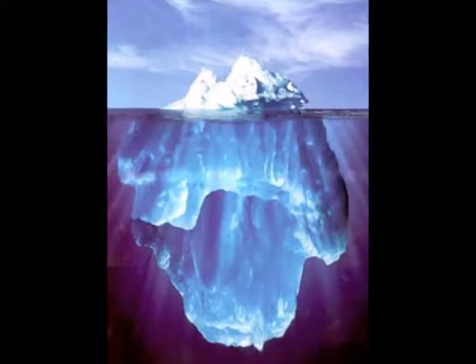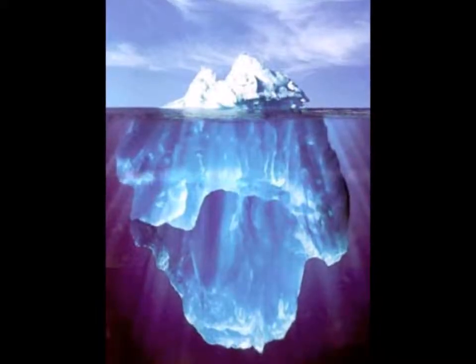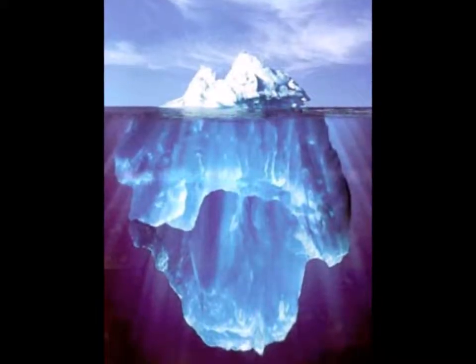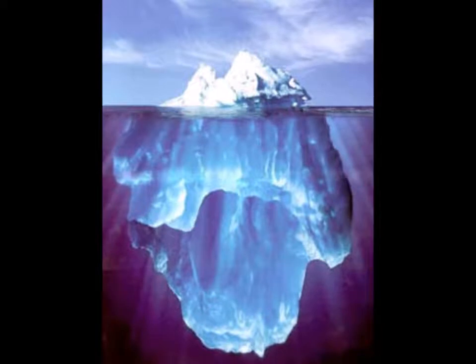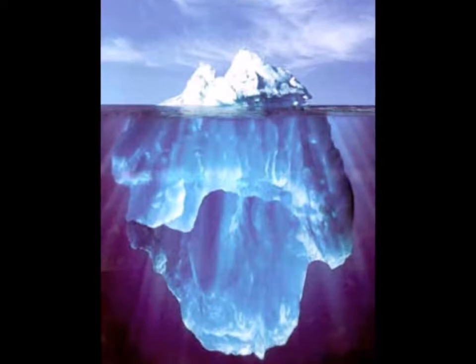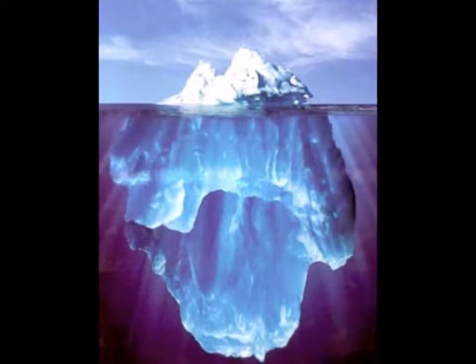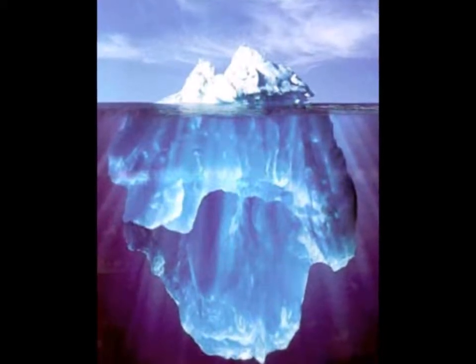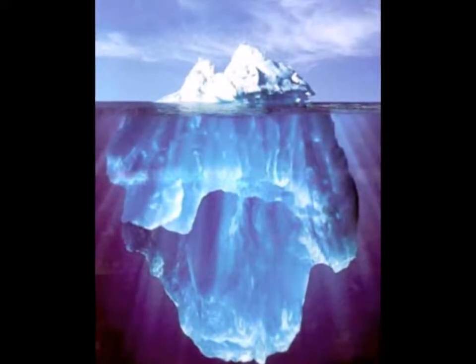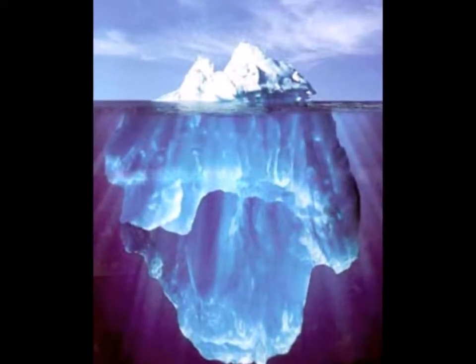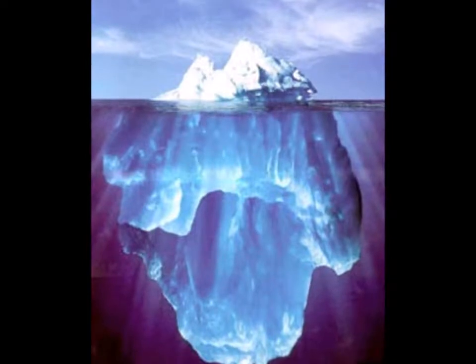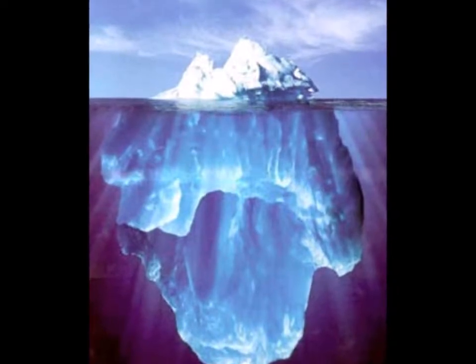Let's look at the formation of icebergs. An iceberg is a large mass of ice partially submerged in water, since the density of ice is slightly less than that of water, part of it floats above the surface.